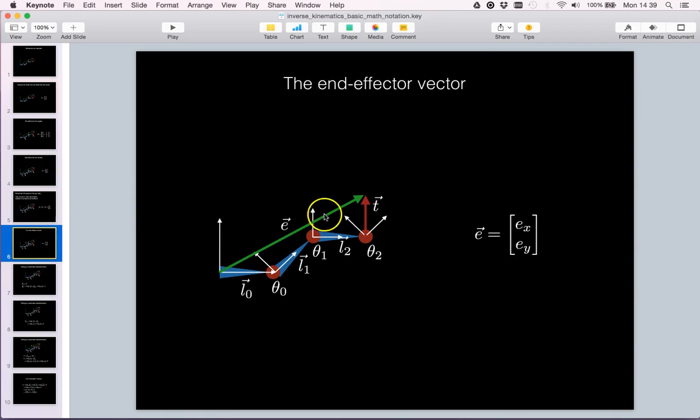Finally we have the end effector vector denoted by the symbol E. This too has two coordinates X and Y. We now have most symbols in place and we can start working out how coordinate transformations work.